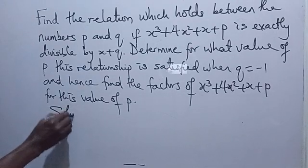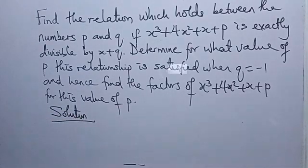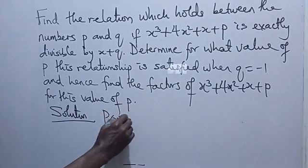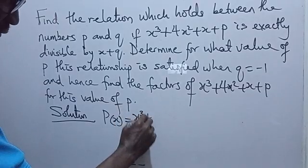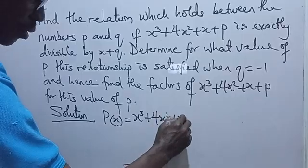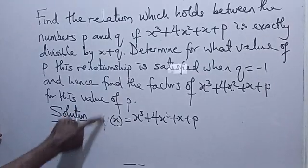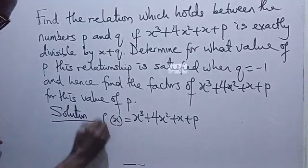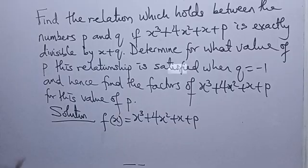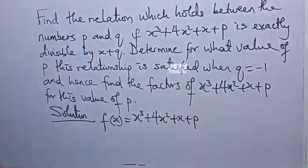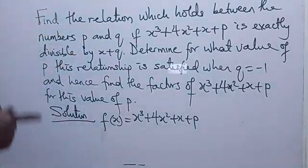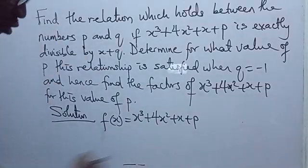Now, the polynomial expression given to us, f of x, is x cubed plus 4x squared plus x plus p. We may use f instead of p so that it does not confuse us with the small p here. So let's say we use f of x. Now, we want to find the relation between p and q in this expression, if this expression is exactly divisible by x plus q.